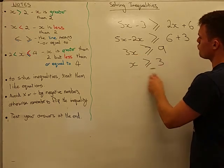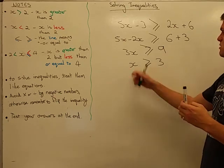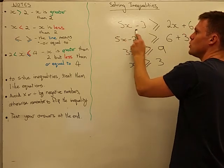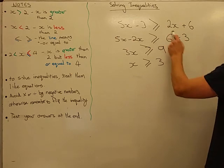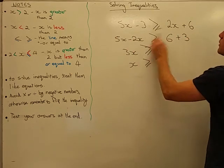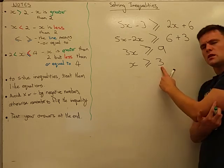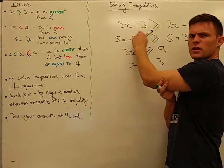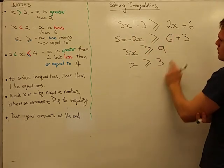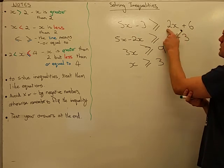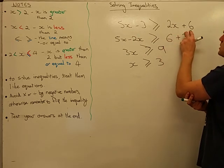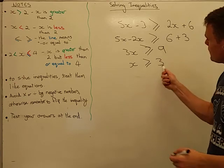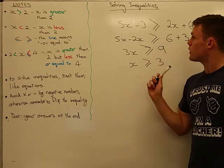Let's test this — x is greater than or equal to 3. Let's pick 10: 5 times 10 is 50, take away 3 is 47 on this side. On the other side, 2 times 10 is 20, plus 6 is 26. 47 is definitely greater than 26. What if I substitute in 3? 5 times 3 take away 3 gives 12, and on the other side 2 times 3 is 6, plus 6 is 12. So 12 is greater than or equal to 12 — correct. Any value 3 or more will solve this inequality for x.